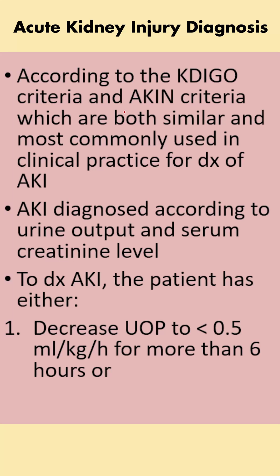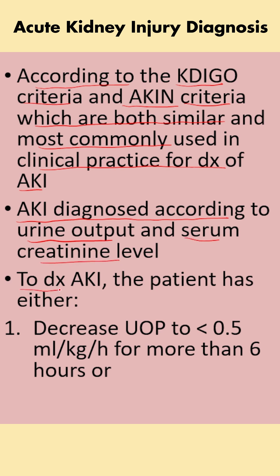Here I will mention the diagnosis criteria for acute kidney injury. According to the Kidney Disease Improving Global Outcomes (KDIGO) criteria and the Acute Kidney Injury Network (AKIN) criteria, acute kidney injury is diagnosed based on urine output and serum creatinine levels.